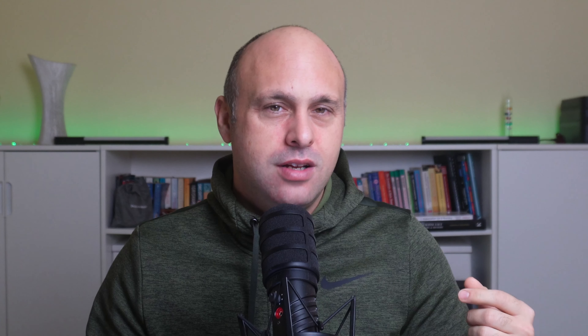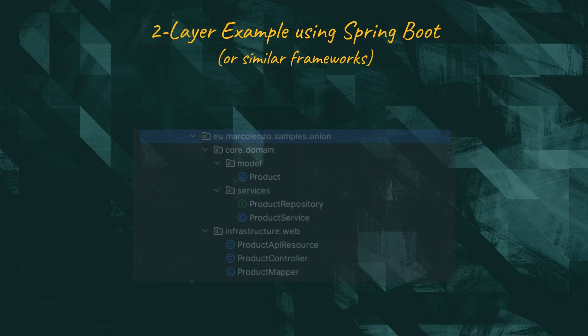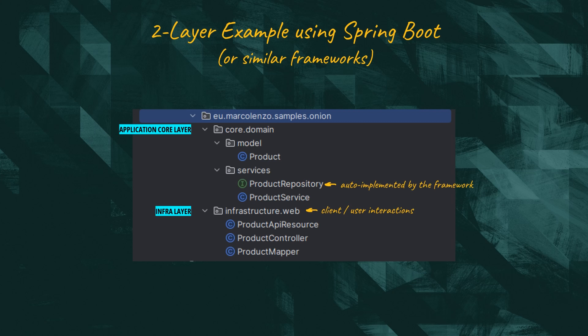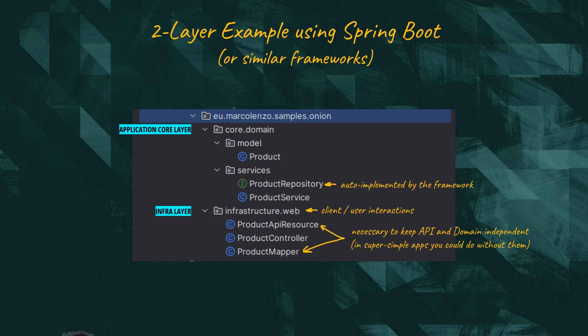A simple application that leverages a modern framework like Spring Boot can usually stick to the four principles with just two layers: the core, where we place the business logic and domain objects, and the web or UI layer, where we handle the interaction with clients or users.